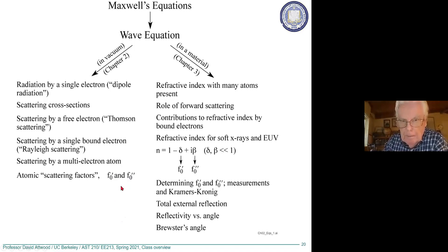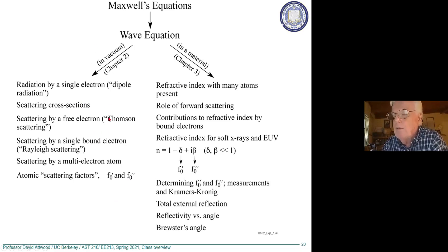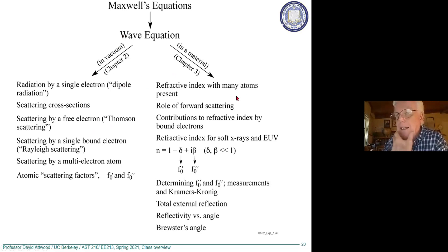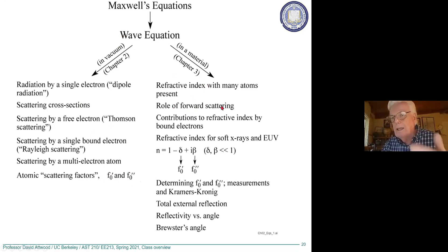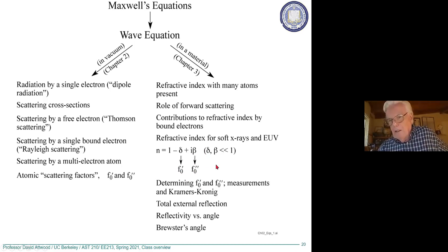In the forward direction something special happens: the subscript zero becomes appropriate and we don't have complicated angular dependencies. That covers scattering, then in chapter 3 we'll use the same equations but with j representing many atoms rather than a single particle. They all have their own complications embedded in the atomic scattering factor, and the role of forward scattering becomes very important, leading us to the refractive index.